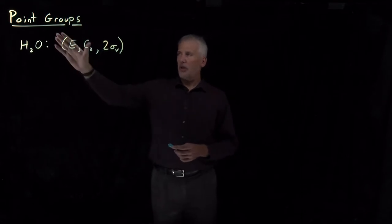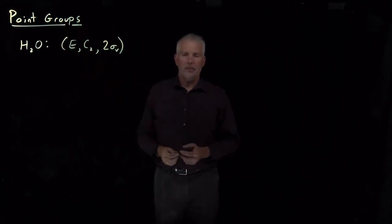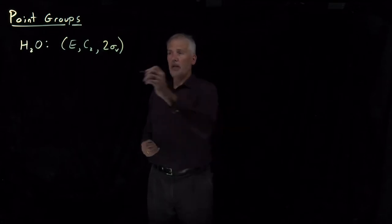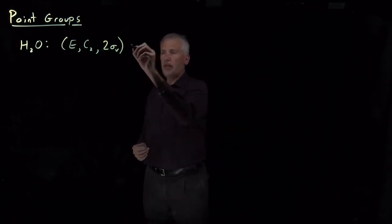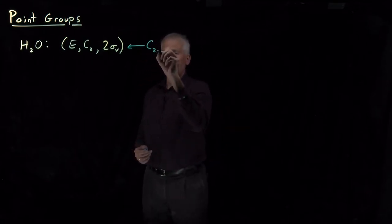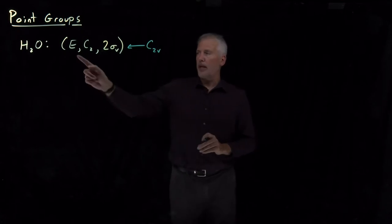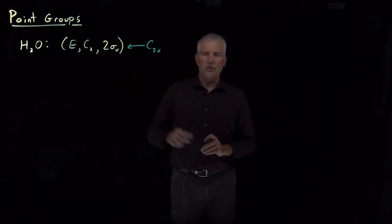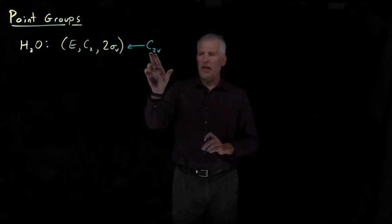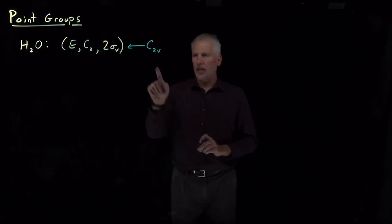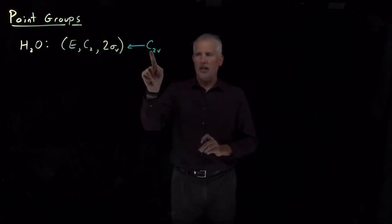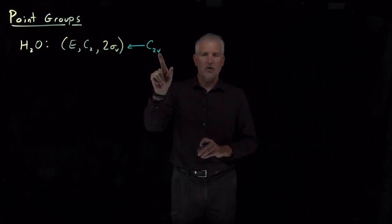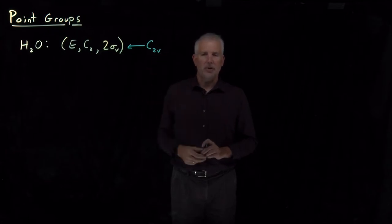That group is an example of something mathematicians and chemists call a point group. We can give names to these individual groups. The group formed by identity, a C2 rotation, and two different reflection planes is called C2V — a name reminding us there's a C2 rotation and vertical reflection planes in that group.